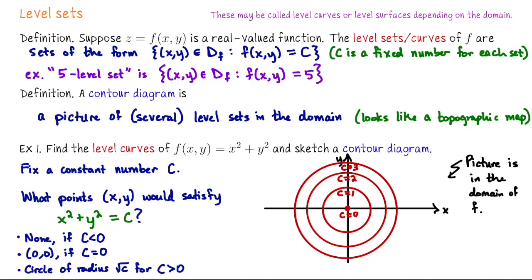So this is an example of a contour diagram. It's a picture in the domain that tries to give us a sense of the shape of the graph of this function by telling us where we can look for different types of altitudes for this scalar value function. Let's look at a couple other examples.